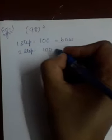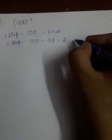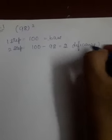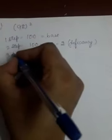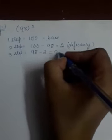100 minus 98 is 2. When it is lesser than 100 we call it deficiency. What is the next step? Third step, step number 3. What is the deficiency, minus it from the original number. 98 minus 2 is 96.